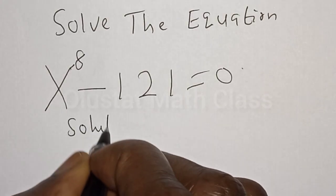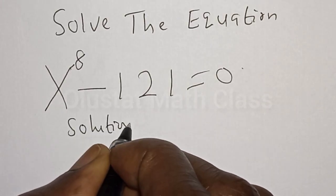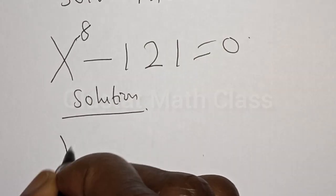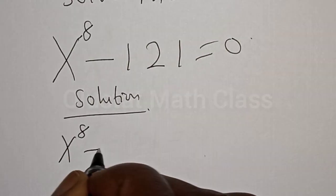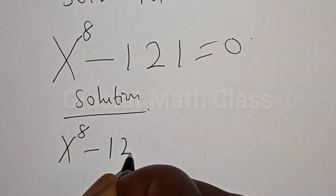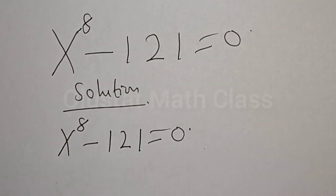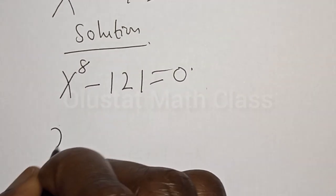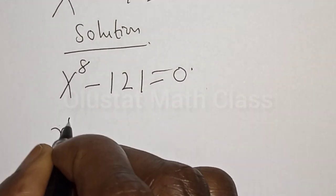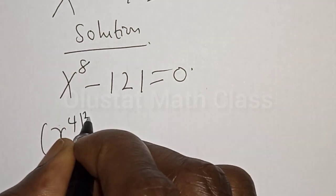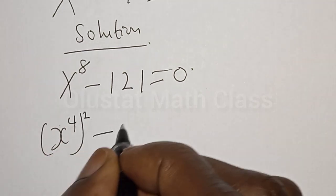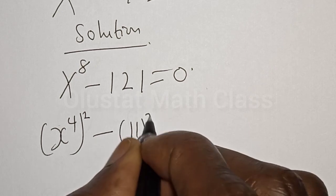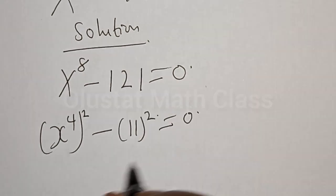Solution. We have the given equation as s raised to power 8 minus 121 is equal to 0. Then s raised to power 8 can be expressed as s raised to power 4, all squared, and 121 can be expressed as 11 squared, equal to 0.